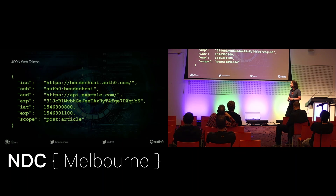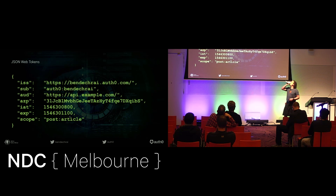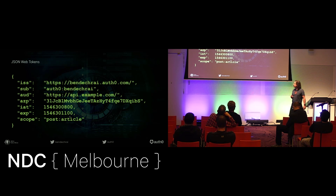There's another JWT — the access token — that contains different information in the payload. Here you can see the issuer, the subject, the audience that is permitted to consume the token, and at the bottom, the scope. In this example, the bearer of this access token could send a message to the example API to post a new article, but presumably not delete anything.